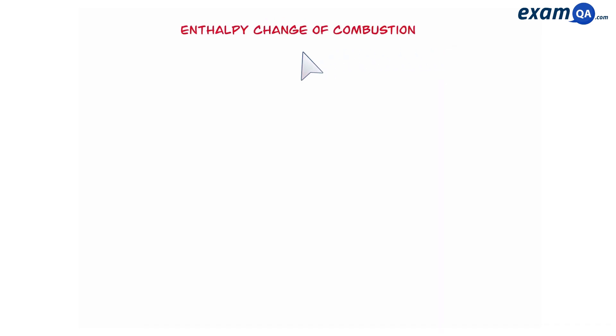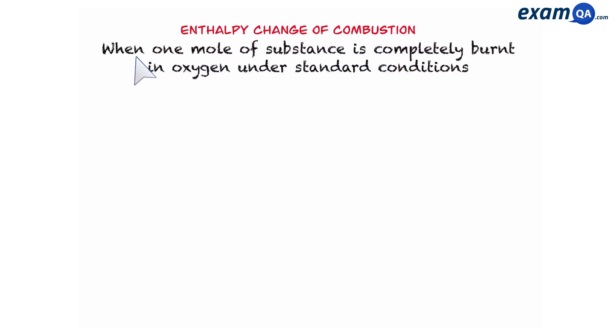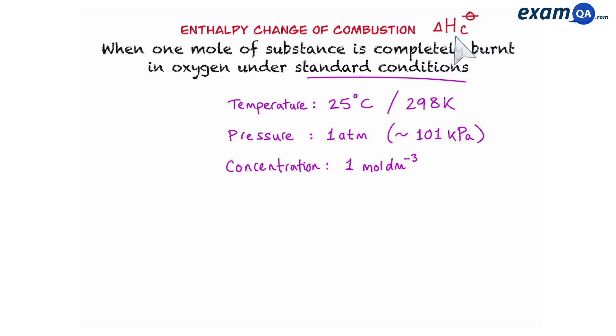Before we look at Hess's law calculations, let's quickly remind ourselves of two important definitions. The first one is enthalpy change of combustion, and the definition is when one mole of a substance is completely burnt in oxygen under standard conditions. Standard conditions refer to temperature as being 25 degrees Celsius, pressure being 1 atmosphere, and any solutions having a concentration of 1 molar. Also, this is a symbol for standard enthalpy change of combustion. The circle with a dash through it means standard conditions, and the C refers to combustion.